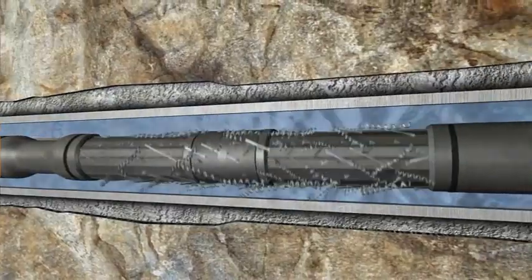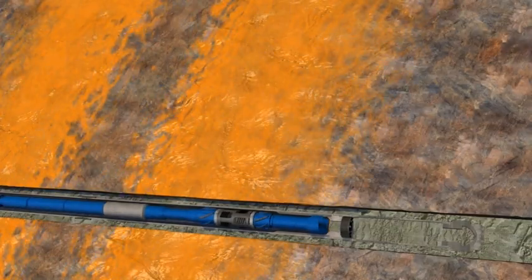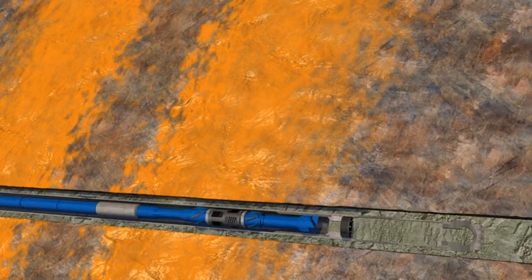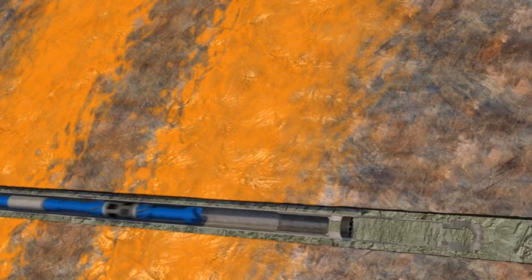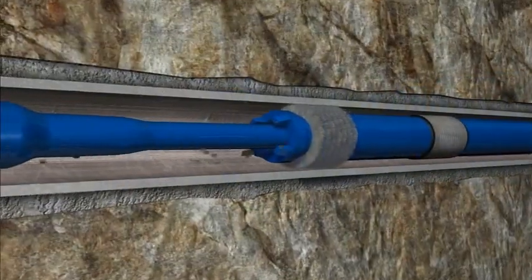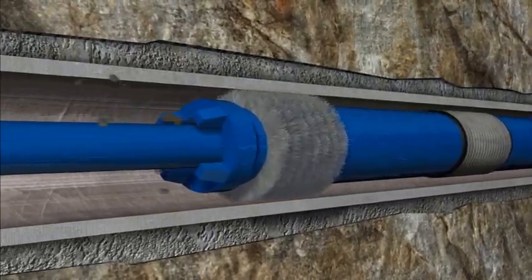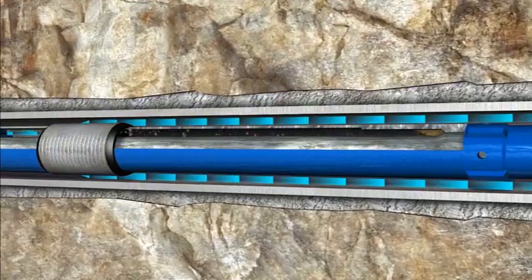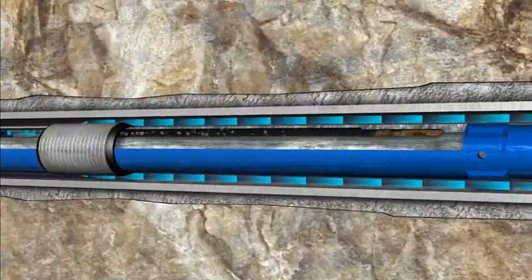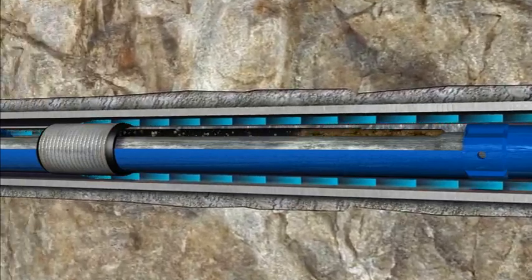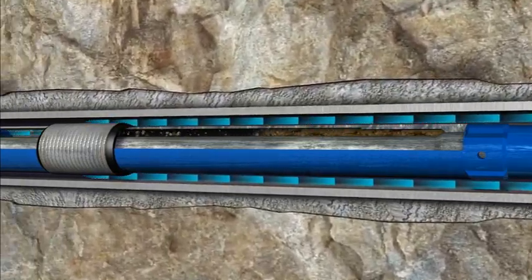Once the well's original fluid has been displaced, the Smart Intervention wellbore cleanup bottom hole assembly can be pulled out of the hole to capture any residual debris suspended in the fluid in the multitask filter. The multitask filter is activated mechanically when picking up or slacking off. When pulling out of the hole, the bypass closes to divert fluid through the filter media, capturing any debris suspended in the fluid column and isolating it in an internal debris chamber.